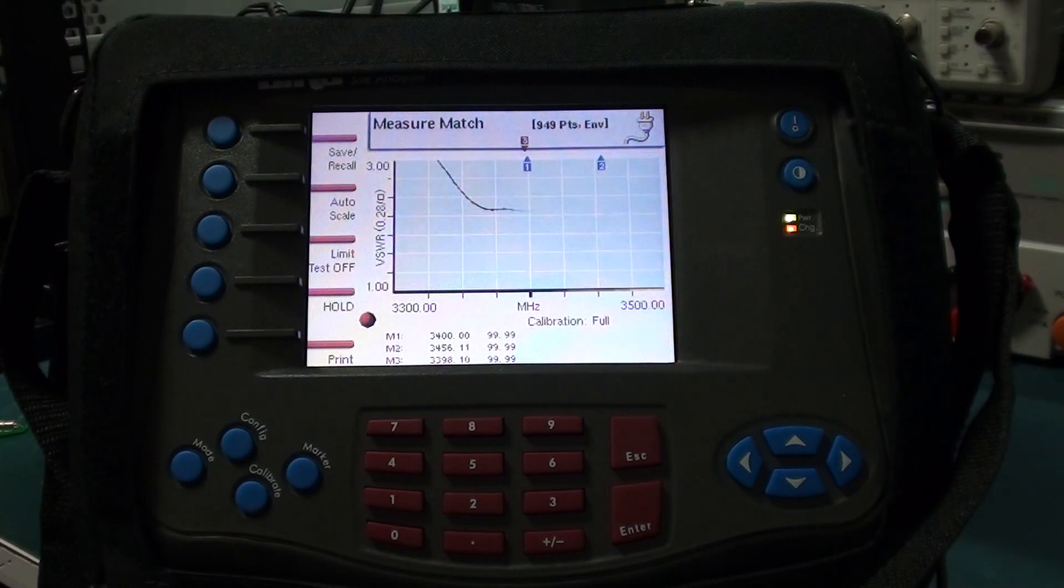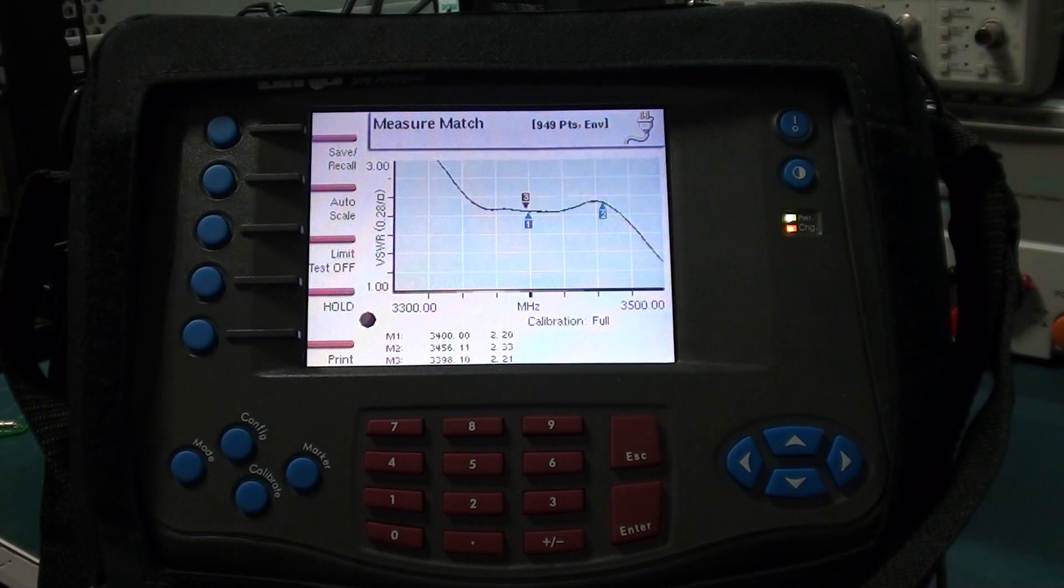I've programmed the markers for the common region frequencies. Marker 1 is at 3400, very close to 3400.1, we can see it's 2.21 to 1. Marker 2 for region 2, 3456.1, 2.33 to 1 SWR. And for those of us in region 3, 3398.1 to 2.21.